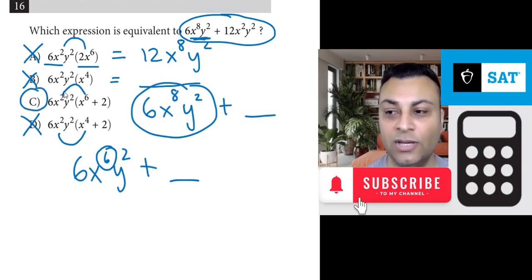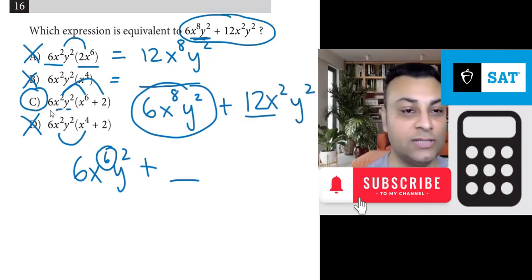If you follow through with the expansion, you would get 6 times 2, 12. And you still get x squared y squared, because you have x squared y squared here. So option c is correct.